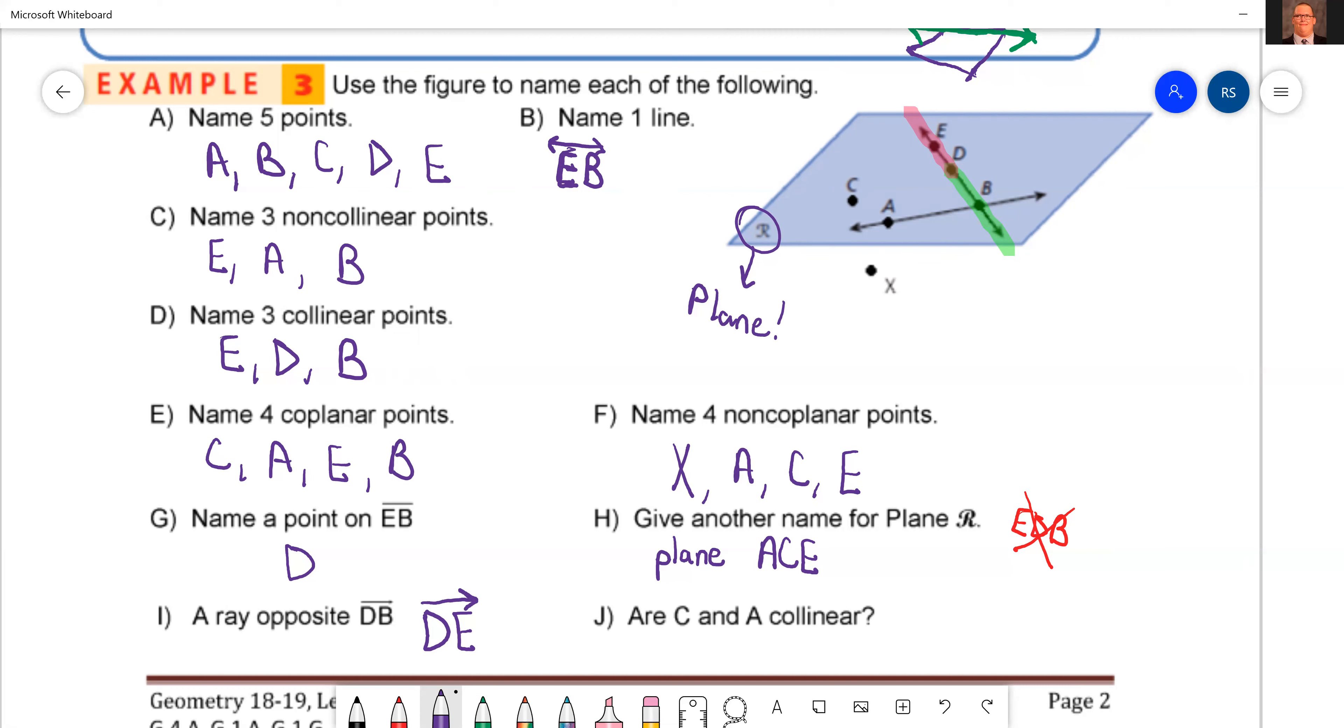And last but not least for the notes, are C and A collinear? Just point C and point A. Are they collinear? If you say no, think about what we said on the front of the notes. Can you draw a line in between the two? Looks like I just did. So are those two points by themselves collinear? Yes. Okay, so there's your notes for Unit 1, Day 3. Stay tuned for the guided practice.